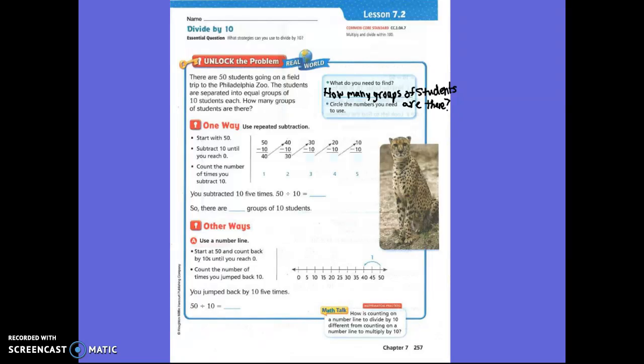Boys and girls, now we're going to circle the number that we need to use, the numbers we need to use. So what's one of the first numbers, Jacob? Fifty. And what's the second number, Cooper? Ten. What division problems do you think we're going to be writing? Kevin? Fifty divided by ten equals, and then we go up on here, okay?